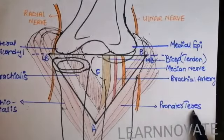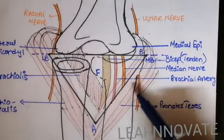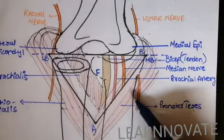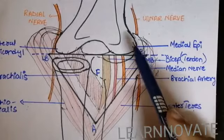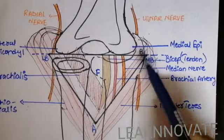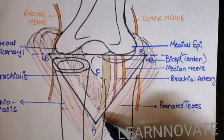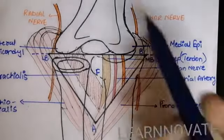This pronator teres provides a medial attachment, or you can say the medial boundary of the cubital fossa, because it is attached from the medial epicondyle and going to attach on the anterior surface of the forearm.